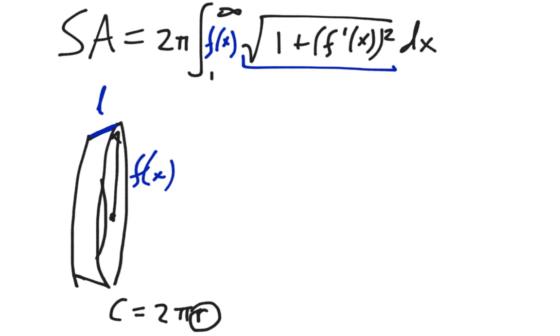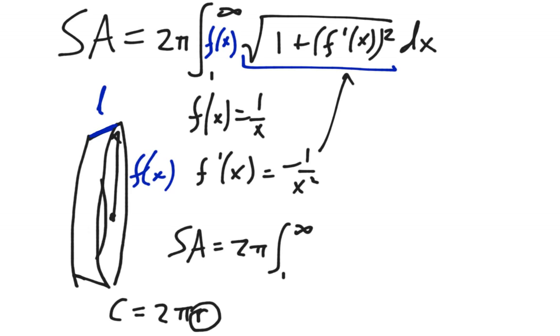Let's apply it to Gabriel's trumpet, where basically f of x equals 1 over x. We need to find f prime of x, so the derivative of 1 over x is negative 1 over x squared, so we're going to end up plugging that into there. So we get the surface area equals 2 pi integral 1 to infinity of 1 over x, because that's f of x, square root 1 plus, we were squaring negative 1 over x squared, so that's going to end up being 1 over x to the 4th dx.